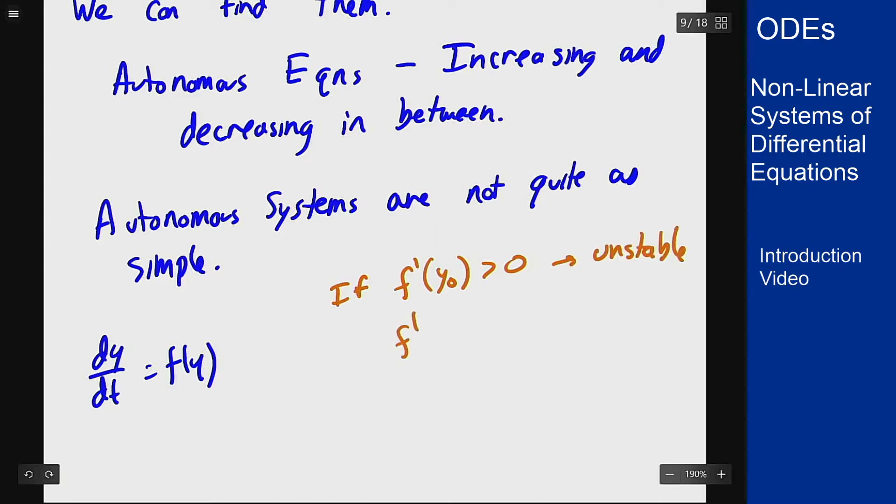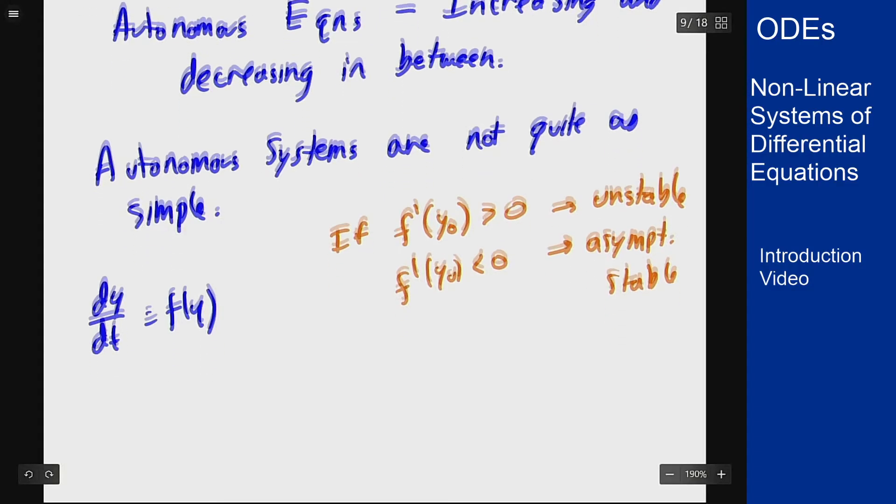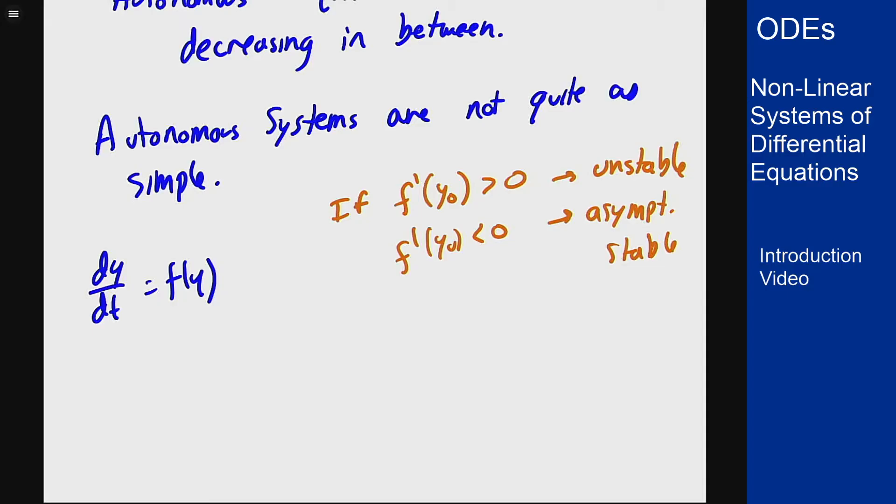And if f' was negative, that means it was asymptotically stable. One way to think about this is via the linearization of this function f, or the tangent line at this point. If we do a tangent line expansion, we can approximate f(y) by f(y₀) + f'(y₀)·(y - y₀). If I know this is zero, that goes away, and I'm left with dy/dt effectively equal to a number times y. We know how that behaves. If the number is positive I get growing exponentials; if negative, decay exponentials.